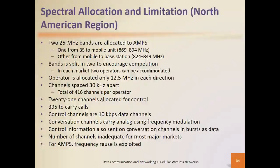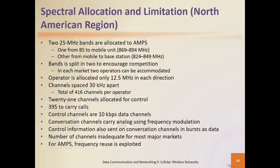21 channels were allocated for control, with 395 to carry calls. Control channels were 10 kilobits per second data channels. Conversations on traffic channels carried analog signals using frequency modulation — they were not incorporating any digital encoding schemes at the time because it was purely analog, so they were reliant on modulation. The number of channels was inadequate for most major markets because of the limited spectrum allocation. For AMPS, frequency reuse had to be exploited to address capacity needs, which was one of the limitations of the first generation.